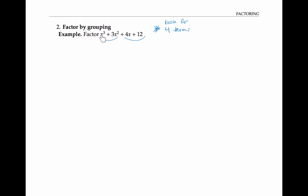The greatest common factor of x cubed and three x squared is x squared. So I factor out the x squared and get x plus three. And the greatest common factor of four x and 12 is just four, so I factor out the four from those two terms. Notice that the factor of x plus three now appears in both pieces, so I can factor out x plus three. I'm left with x squared from the first piece and four from the second piece. That completes my factoring by grouping.